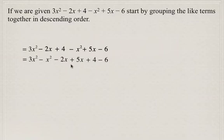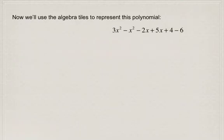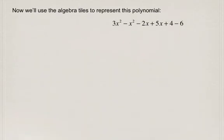Now we've grouped all the terms we can add or subtract. 3x squared minus x squared — we can add or subtract those. Minus 2x and 5x — we can add or subtract those. And 4 and minus 6 are like terms, so we can add or subtract those too. Now we're going to use algebra tiles to represent this polynomial.